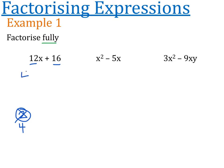So if I take out a four, I then think: what is 12x divided by four? The answer is 3x. Alternatively, what times by four gets me to 12x? That's 3x. And what is 16 divided by four? That's four. And there we go - I've factorized that expression. 12x plus 16 can be factorized down to 4(3x + 4). If I wanted to expand the brackets, I should get back to where I started.